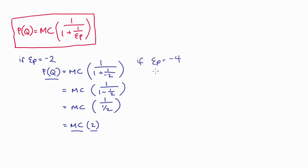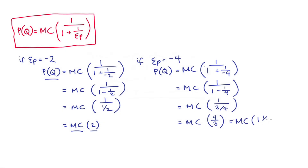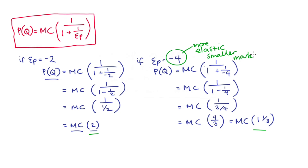Let's try something more elastic — say elasticity equals negative four. Substituting that in, we get price equals marginal cost multiplied by one divided by one plus one over negative four. Cleaning up the parentheses: one divided by one minus a quarter, which is one divided by three over four, equal to four thirds, or one and a third. So with elasticity of negative four, we multiply our cost by one and a third to get the optimal price. Here we see that more elastic demand leads to a smaller markup — multiplying cost by two gives something larger than multiplying by one and a third. The more elastic demand is, the less firms can raise prices without losing customers, so the smaller the markup over costs.